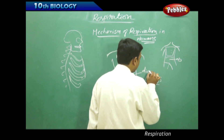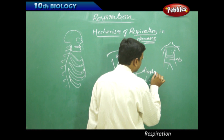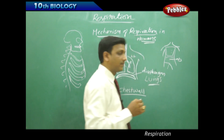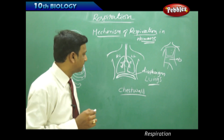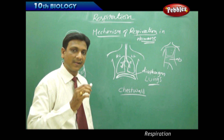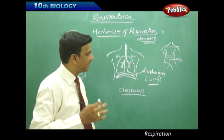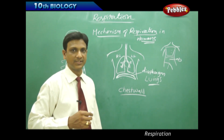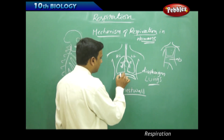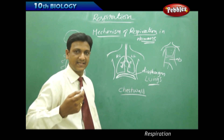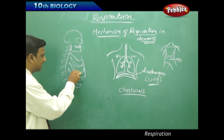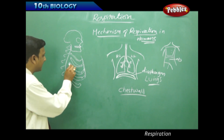Below the chest cavity, separating it from the abdominal cavity, there is a muscular wall called the diaphragm. By the movements of this diaphragm and the ribs in the chest wall, the lungs are made to expand and collapse. The ribs in the chest wall are attached to the spine. In a skeleton, the ribs are attached to the spine at an angle.